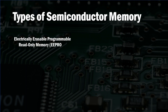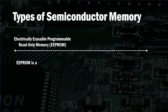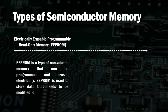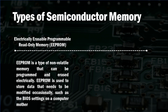The next type of ROM is electrically erasable programmable read-only memory (EEPROM). This type of memory is also non-volatile memory that can be programmed and erased electrically. EEPROM is used to store data that needs to be modified occasionally, such as the BIOS settings on a computer motherboard.